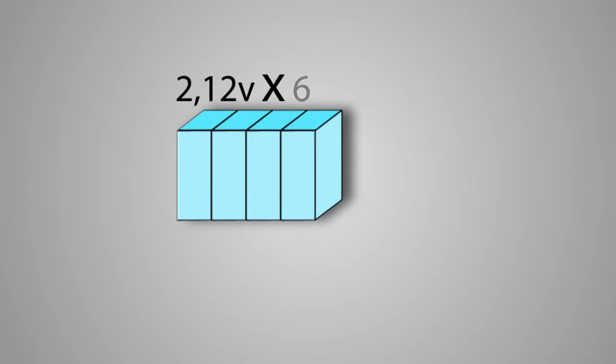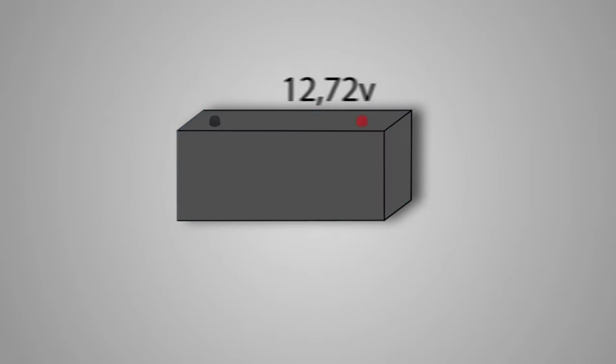The voltage provided by each container is 2.12 volts multiplied by 6 containers is 12.7 volts.